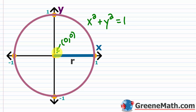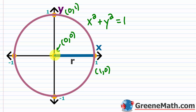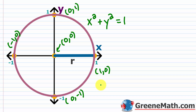From the center, if I move one unit to the right this is the point (1, 0). If I move from the center one unit up this is the point (0, 1). If I move from the center one unit down this is the point (0, -1). And if I move from the center one unit to the left this is the point (-1, 0). The main thing to understand is that the distance from the center to any point on that circle is one unit.